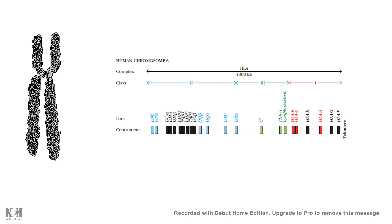Now let's look at the genomic level — what are the differences? It turns out that class 1 MHCs and class 2 MHCs come from different HLA clusters, so the gene regions encoding them are also different.